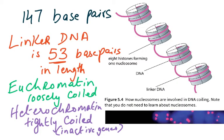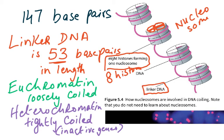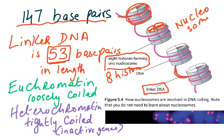DNA is a long thin string, and to fit it into the nucleus you need to wind it — just like winding a long thread around a spool. Eight histones form a nucleosome; the DNA wraps around them twice covering 147 base pairs. The DNA that links one nucleosome to the next is called linker DNA, which has 53 base pairs.